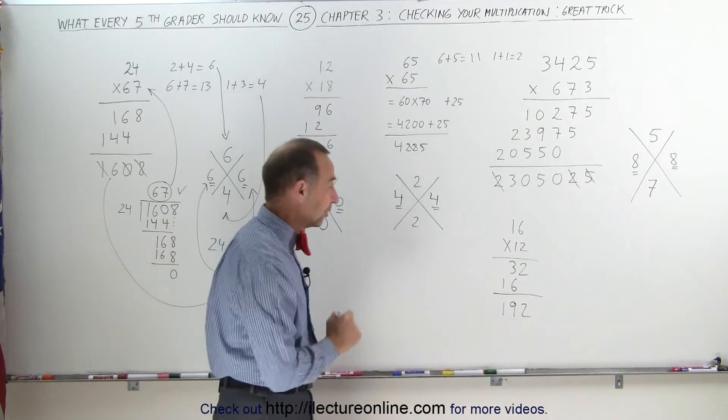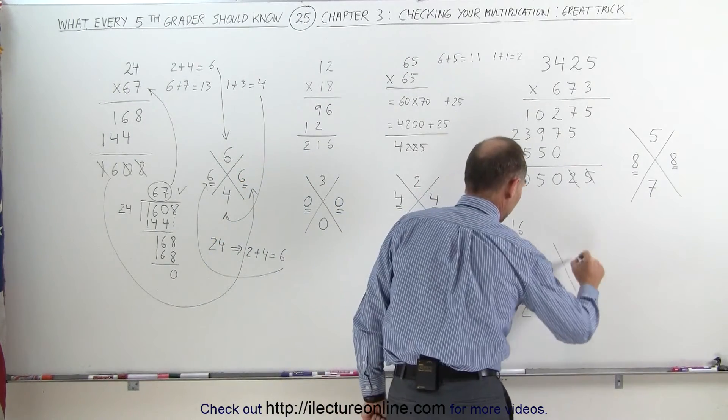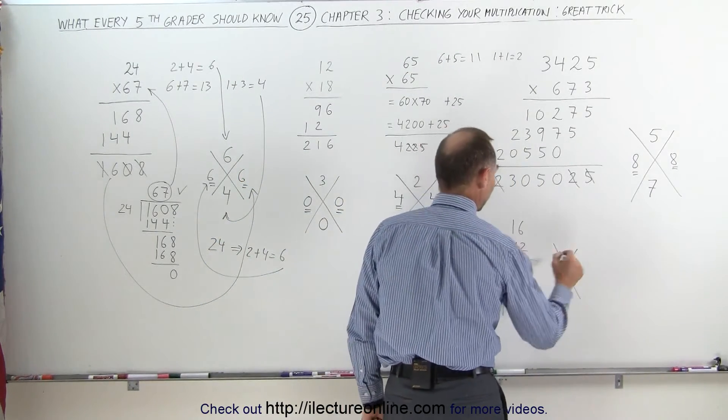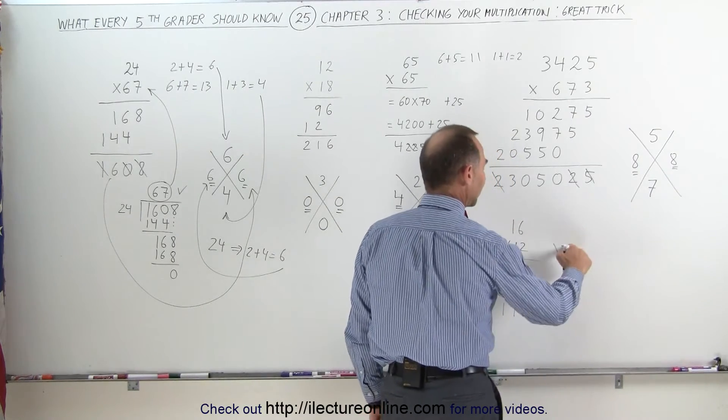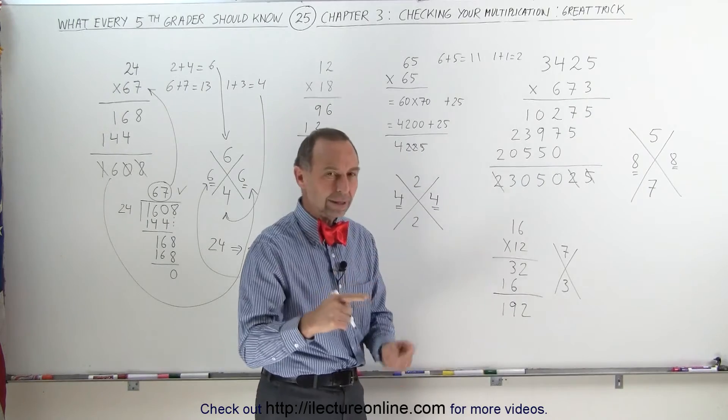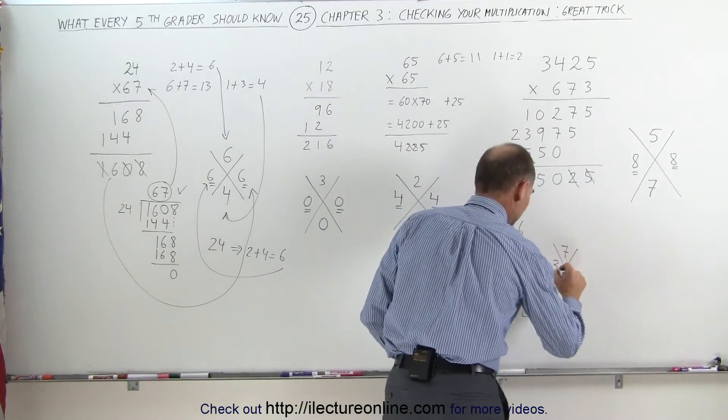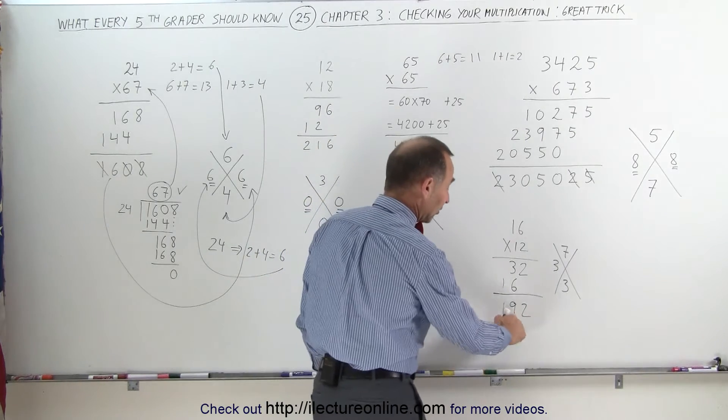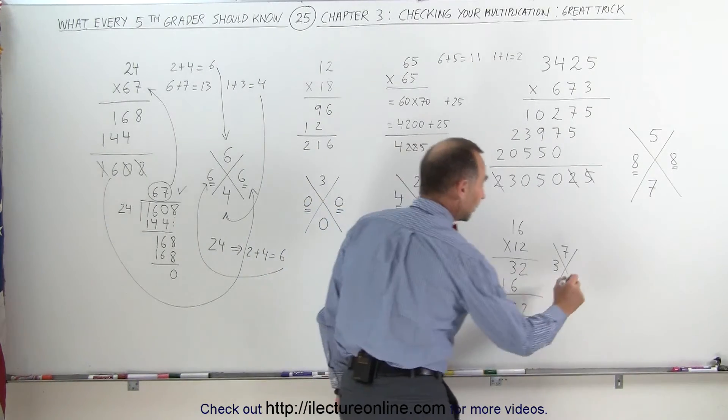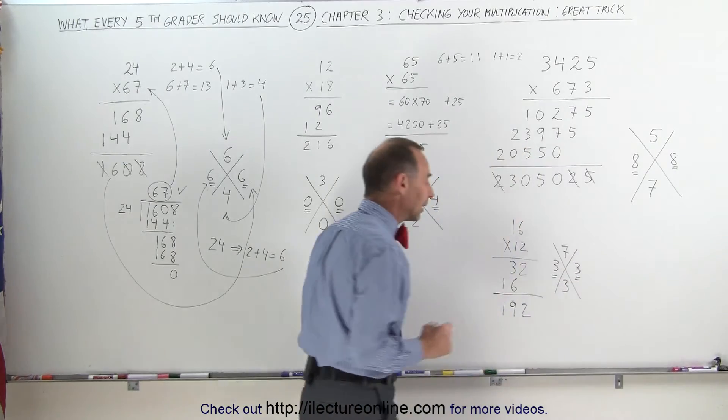Now, again, we'll use the trick to see if we did this correctly. You write down the two lines, and 1 plus 6 gives me a 7. 1 plus 2 gives me a 3. 3 times 7 is 21. That's a 2 and a 1. Add those together, you get a 3. And when we add these numbers together, they better add up to a 3. 9's disappear. We have a 1 and a 2 left. That equals 3. And sure enough, we did it correctly.